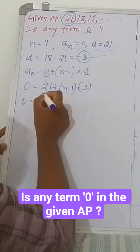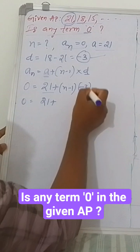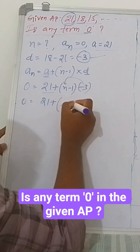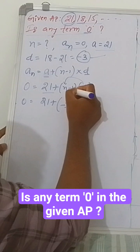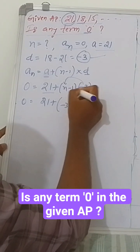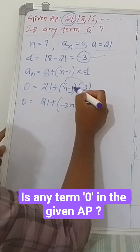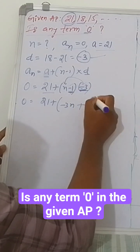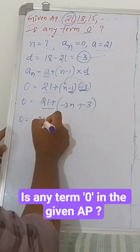So 0 equals 21 plus... multiply minus 3 into (n minus 1). Minus 3 times n gives minus 3n. Minus into minus is plus, so minus 3 into minus 1 gives plus 3. 0 equals 21 plus...